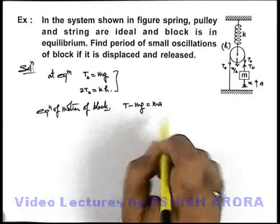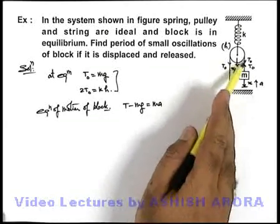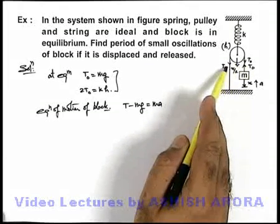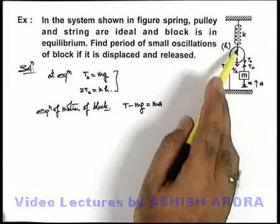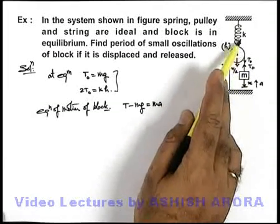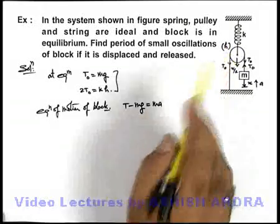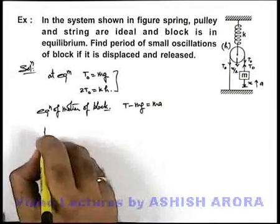And along with this, we can also see that the total downward force on pulley will be 2T, and the total upward force on pulley will be k times (h + x/2). So in this situation we can write.